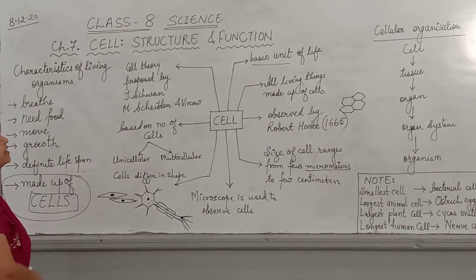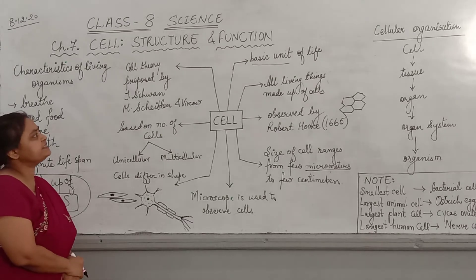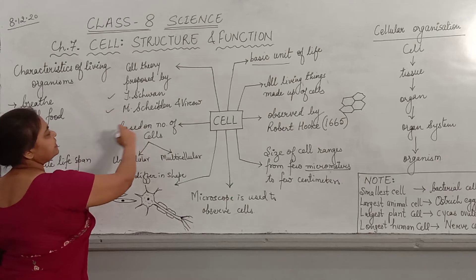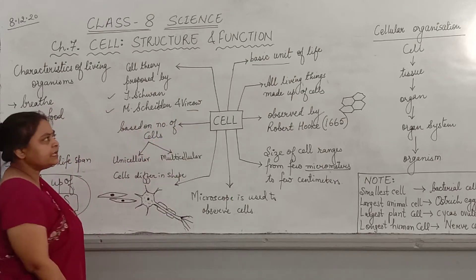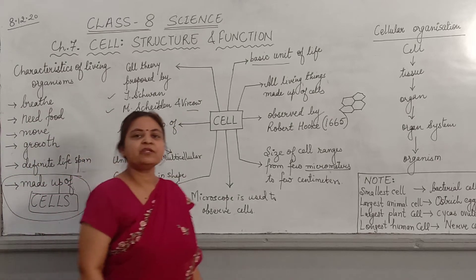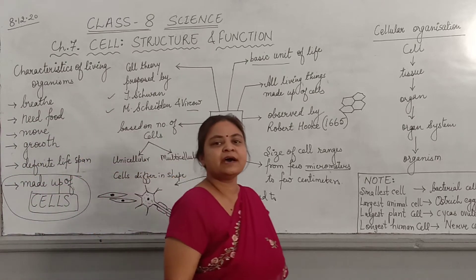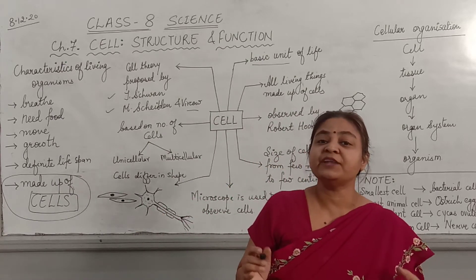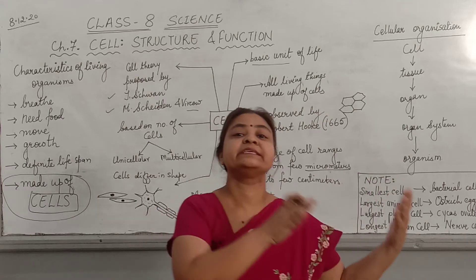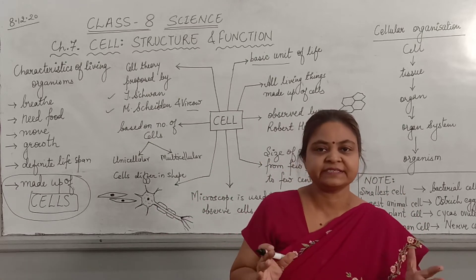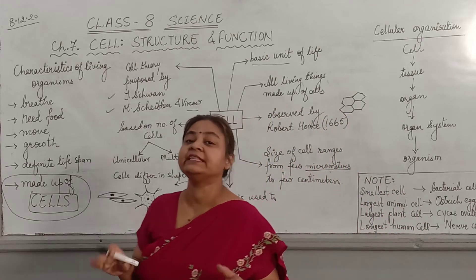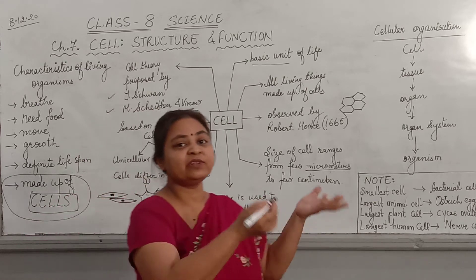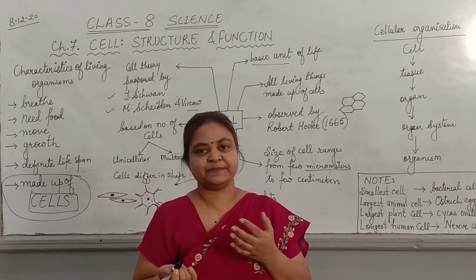Cell theory was proposed by Theodor Schwann and Matthias Schleiden. They said that all living organisms are made up of cells, and cells can only be obtained from pre-existing cells — meaning from older cells only we get newer cells.